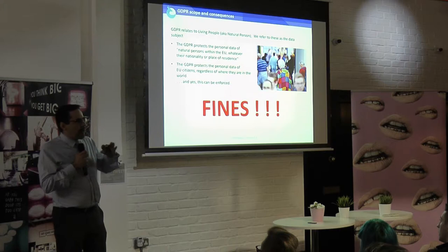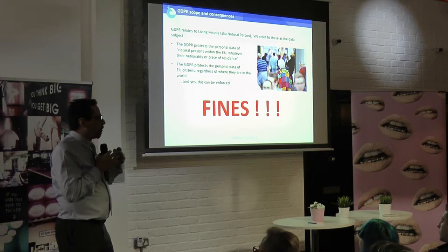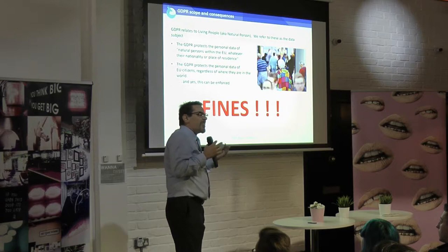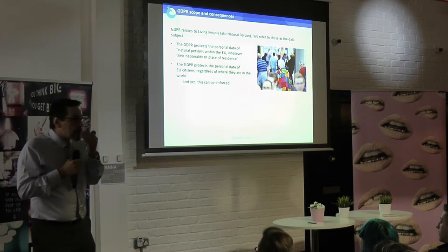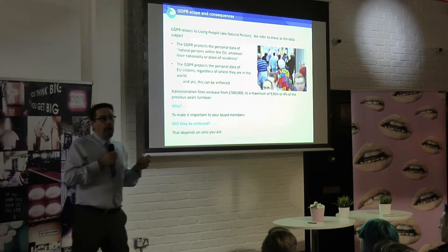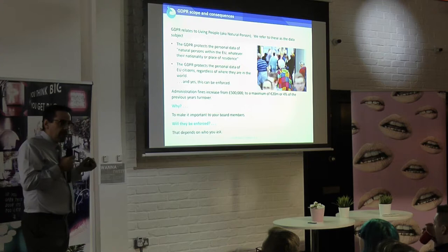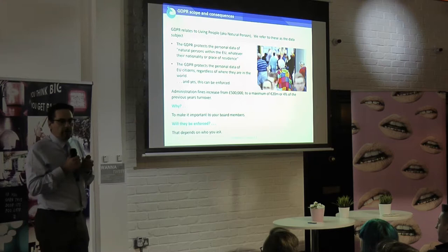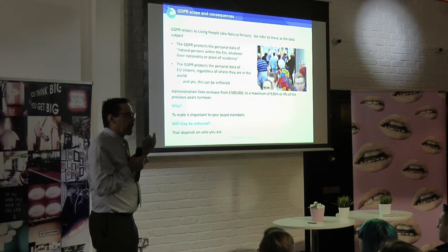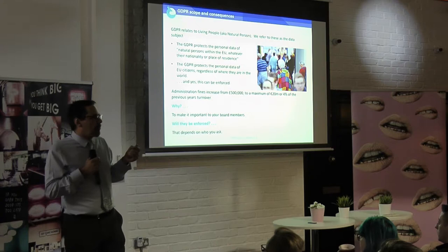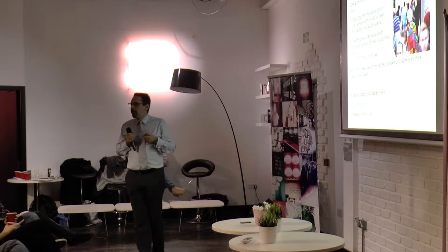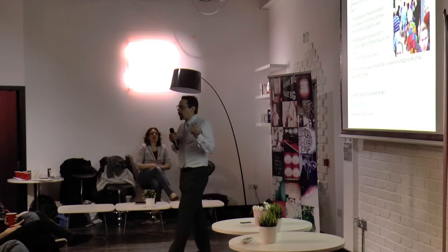Nearly everybody will talk about the fines of GDPR. For me, that's a measure of the maturity of understanding what GDPR is about. If the only thing you can talk about is the fines, then you've not quite moved on from understanding what GDPR is all about. Yes, the fines are significant — moving from half a million pounds maximum that the ICO can currently levy, going up to 20 million or 4% of gross annual turnover. That would put most businesses out of business. My view is those fines are there to make the board sit up and listen, because the board's not listening at the minute. Data protection is currently seen as an IT issue — that's going to change.